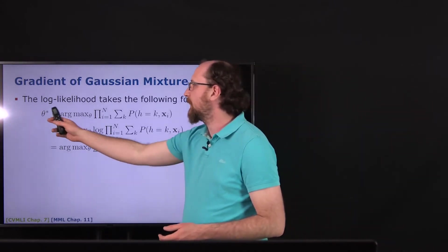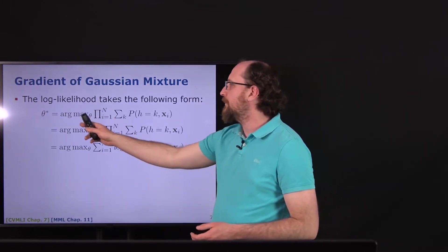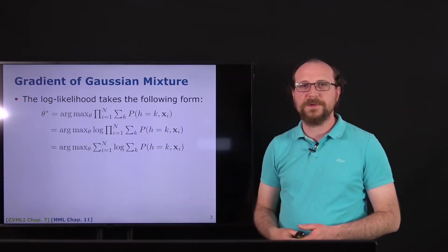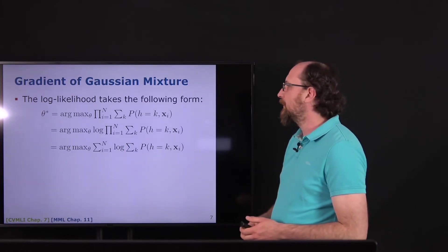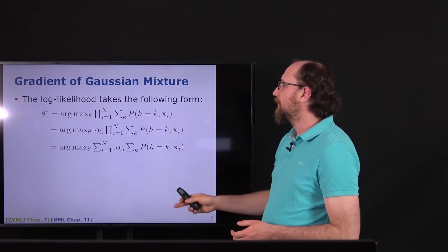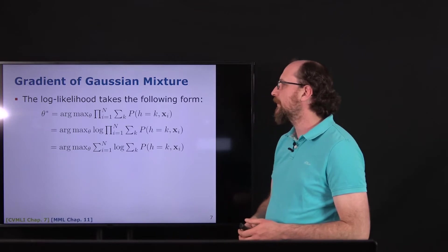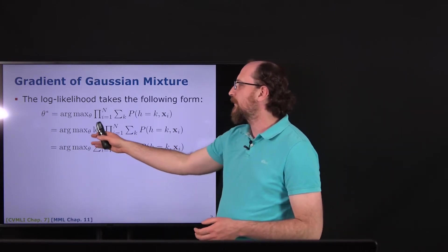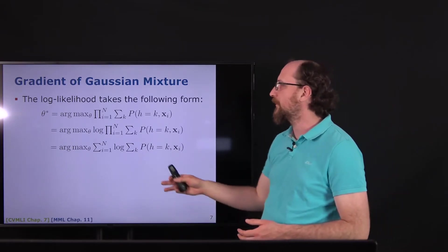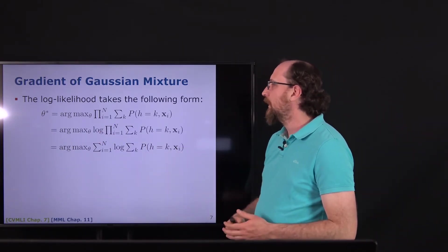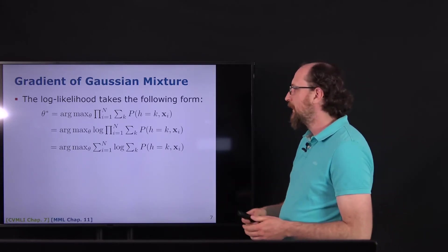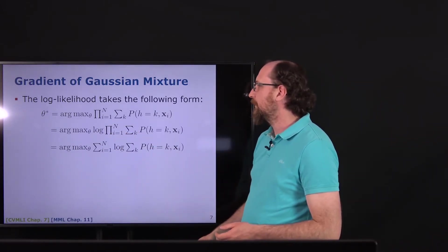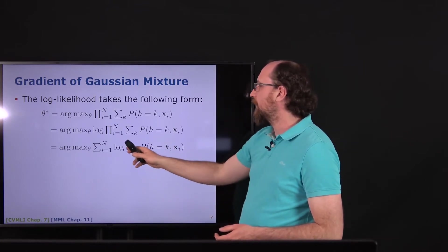We want to find the parameters theta-star by maximizing over all parameters. We have the product over all samples — assuming i.i.d. data (identically and independently distributed) — and then the joint distribution. We can put the logarithm in front, using the usual log-likelihood trick. The product becomes a sum, and then we have the logarithm in front of the sum. Important to note: we are maximizing, not minimizing, because we are not using the negative log likelihood.